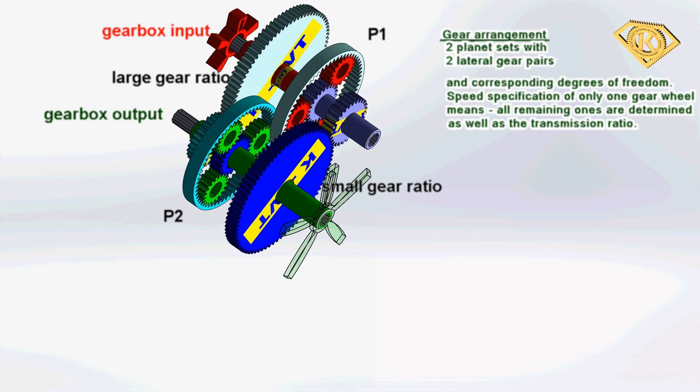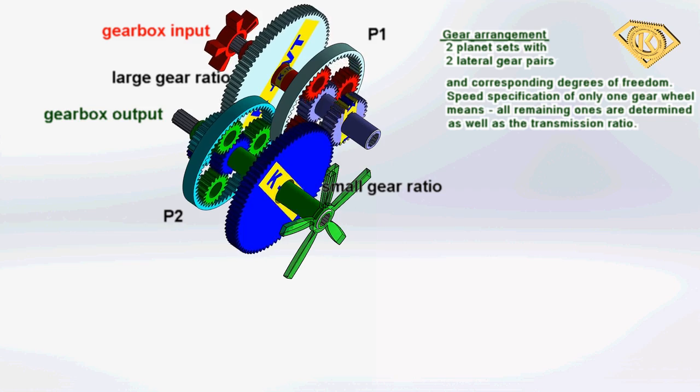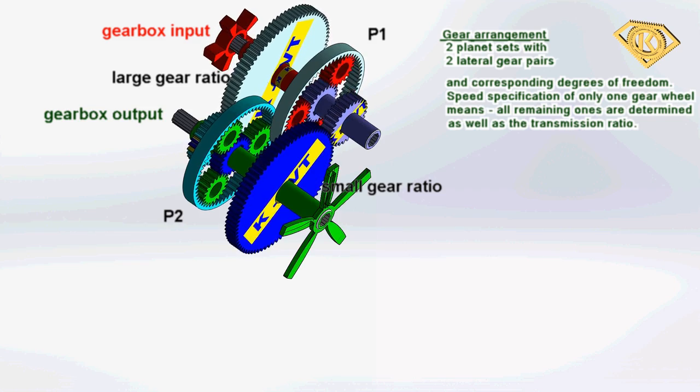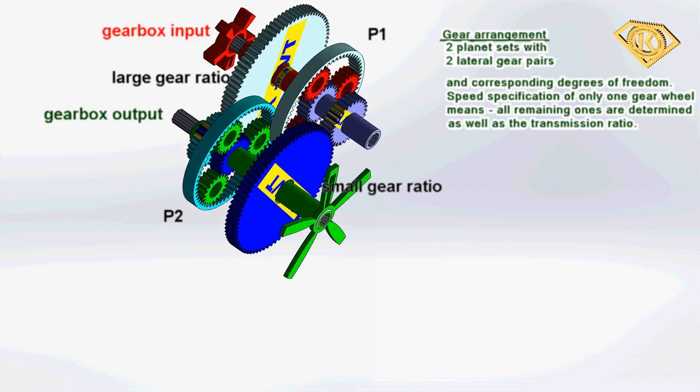If we stop the gear output while the drive is running, the gear arrangement balances itself and all other gear wheel speeds are clearly determined.